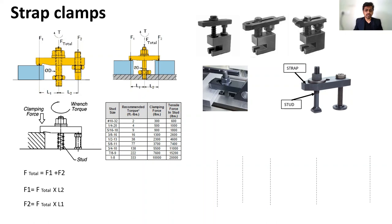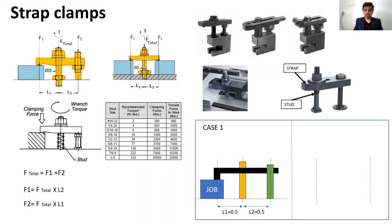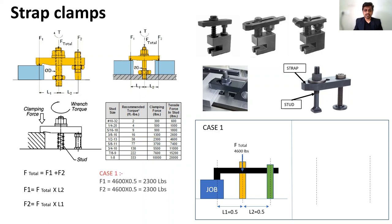Case 1: We have a job and a stud positioned such that L1 and L2 are both 0.5. With a half-inch stud, the tensile force is 4600 pounds. With F_total at 4600 pounds and equal distances, F1 equals 2300 pounds and F2 equals 2300 pounds. Since the stud is at the center, it applies equal forces at both locations.